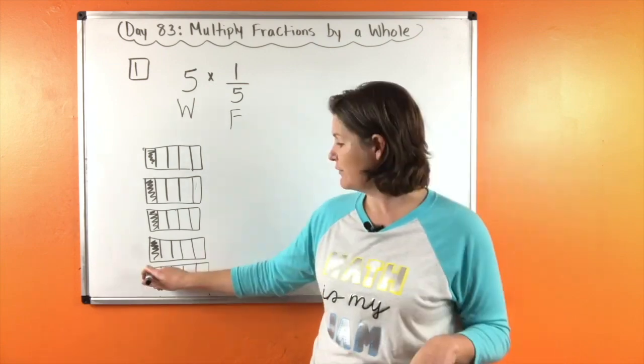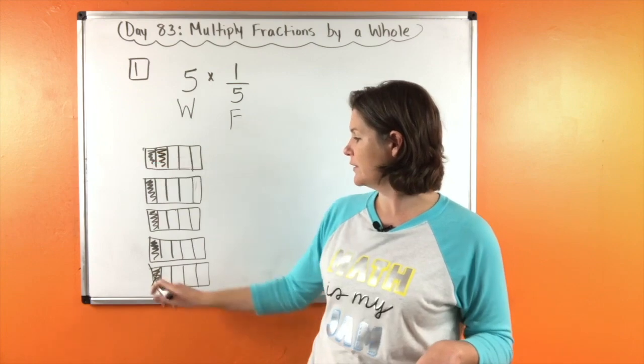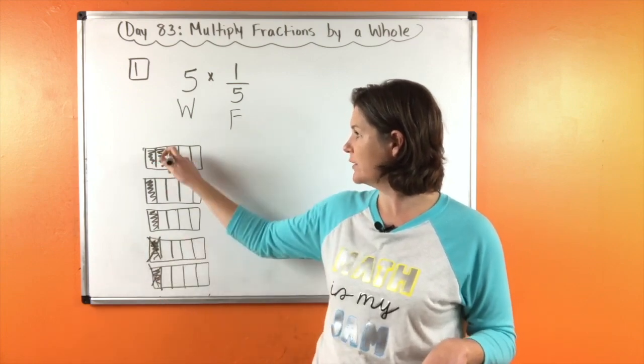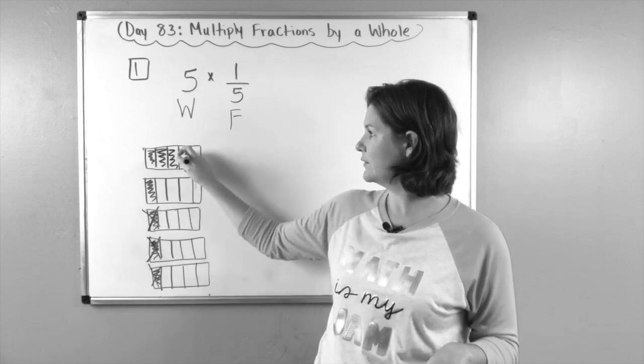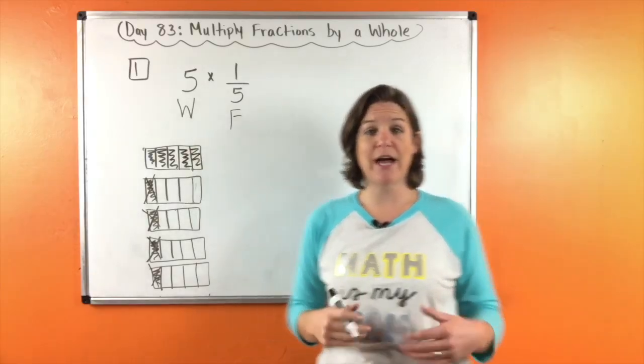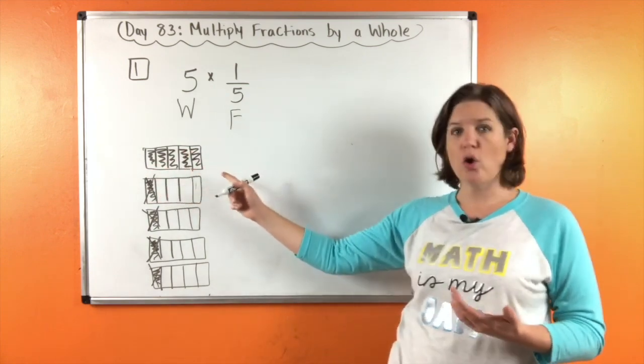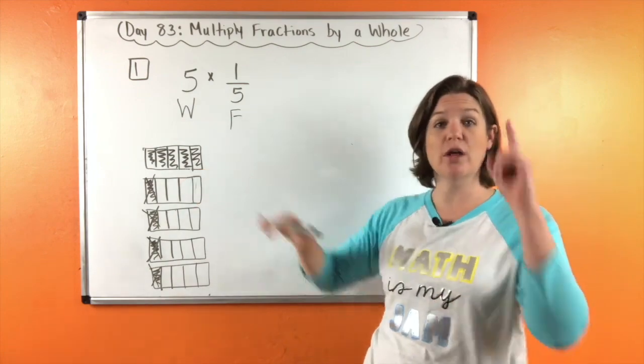Okay, if I were to move this one and put it here, move this one and put it here, I would have one whole piece out of these five groups of one-fifth. That would give me a total of one whole piece, so it is going to equal one.